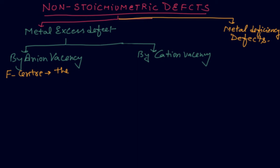Yes my dear student, now the non-stoichiometric defects. This is of two types: one is metal excess defect and number two is metal deficiency defect. Metal excess defect is again two types: number one is by anion vacancy and number two is by cation vacancy.